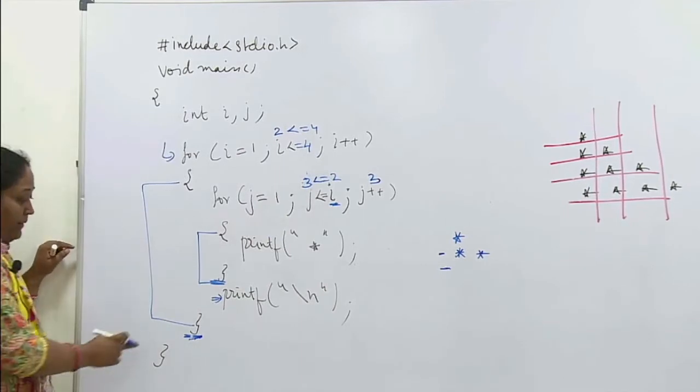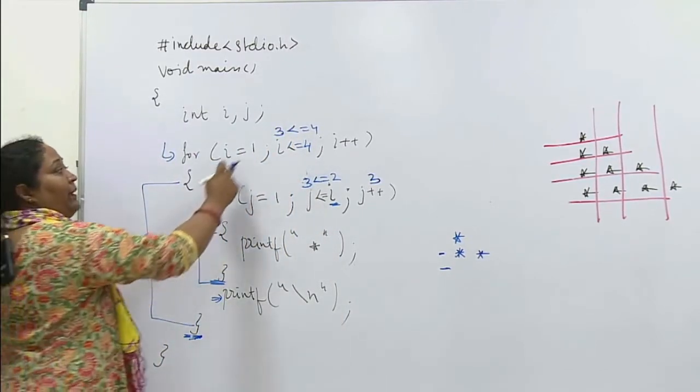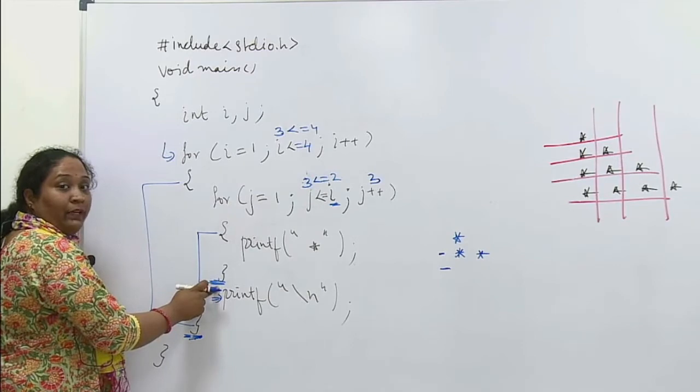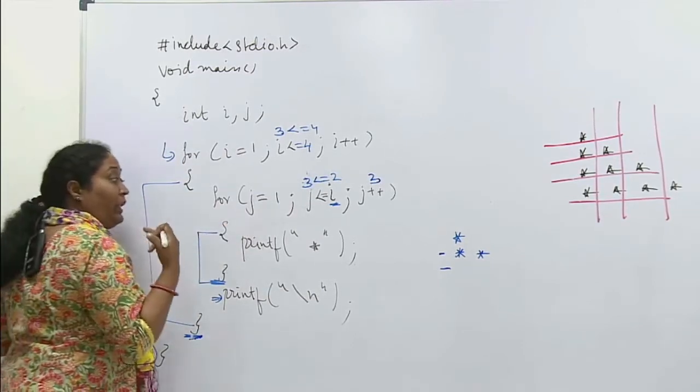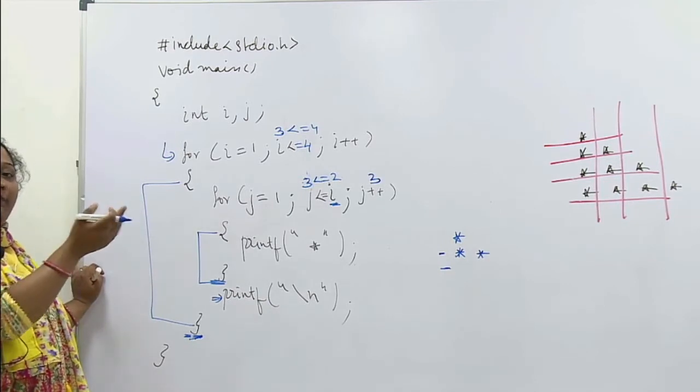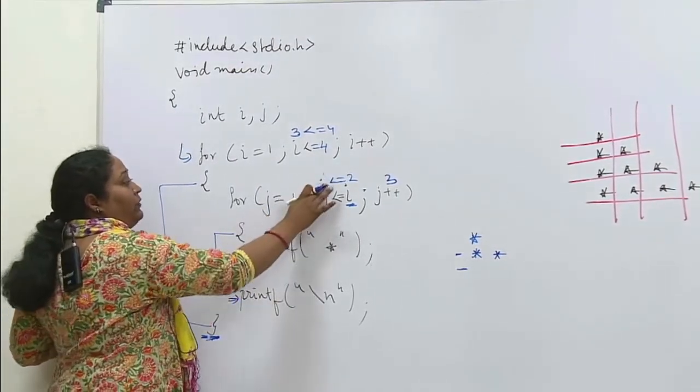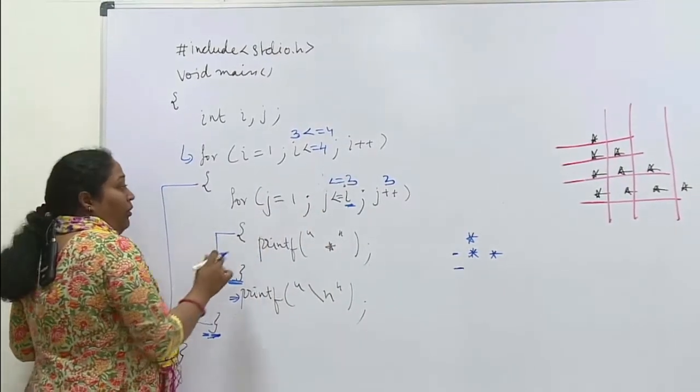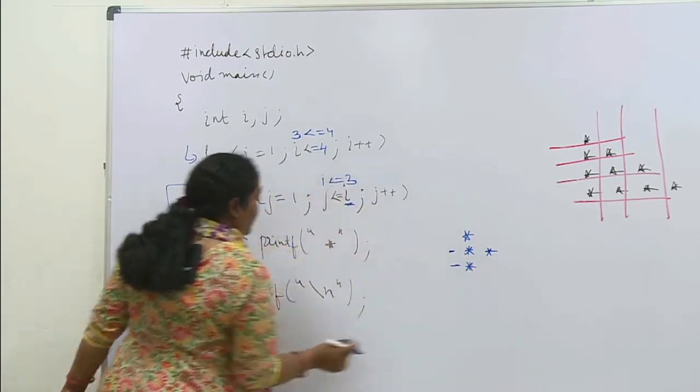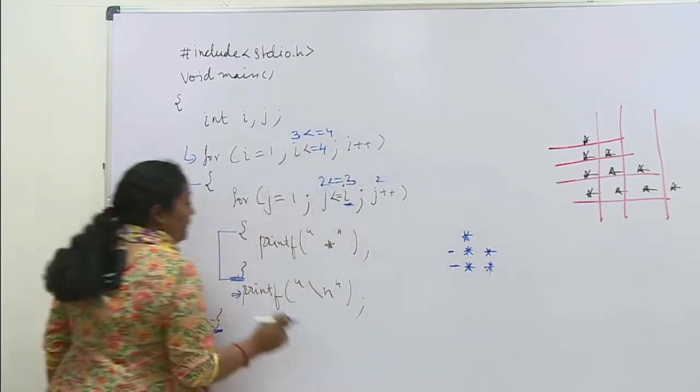Ab yahan pe yahan pe kya hoga? Mera i ka maan change hoke kitna ho jaega? 3. Thik hai? i ka maan 3 lekar ab apan waapas is loop ke andar jaenge. Jab ye loop ek baar khatam ho gaya kyunki dekho ye loop ya khatam ho gaya, khatam hone ke baad har baar ye waapas naya shuru ho raha hai. Is wajah se is j ka maan har baar one se initialize ho raha hai. Agar ye khatam nahi hota aur apan bina khatam ke aage badhate to j ka maan waapas initialize nahi hota. Lekin ye apan pura finish karke ja rahe to j ka maan kitna aaya one. To ye ginti waapas yahan pe to kya aaega? i ka maan 3 hai aur j ka maan pehle se shuru ga one se shuru ga. Thik hai? j ka maan kitna hoga? One. True hai, hum yahan aayenge j ka maan kitna ho jaega? Two. True hai.